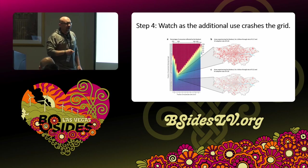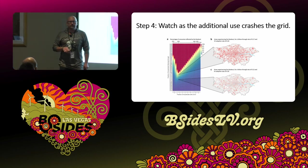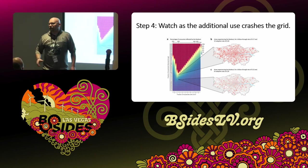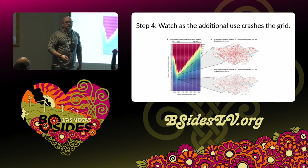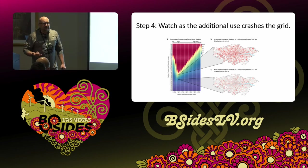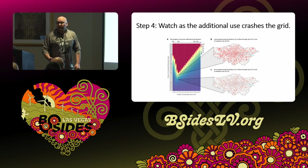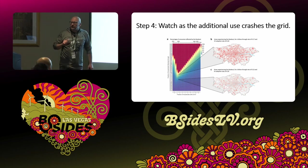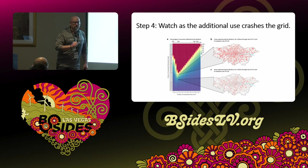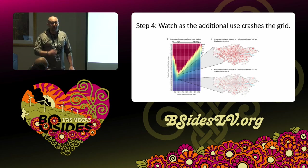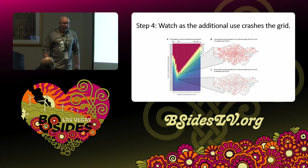When people talk about MDM — mis, dis, and malinformation operations or attacks — it's typically talked about in the context of some sort of social media flame war or getting a certain politician elected. But what this demonstrates, this proof of concept, is that it's possible to attack physical infrastructure through cognitive means. By changing people's behavior, we can actually alter physical infrastructure, and I think that's significant.